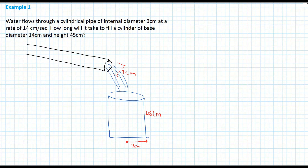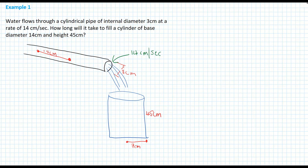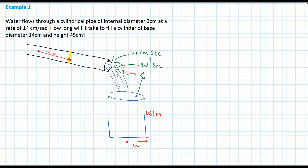Water flows through the pipe at a rate of 14 centimetres per second — meaning that little bead travels 14 centimetres every second. What we want to find is the volume of water coming through this object per second, because that helps us find how long to fill the larger cylinder. I'm going to take the small highlighted portion of the pipe — 14 centimetres in length — and sketch it.